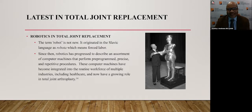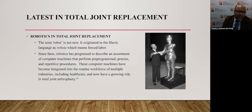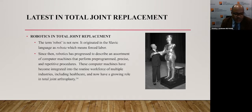The latest in total joint replacement: for many of my colleagues, robotics and total joint replacement is not very new. But for the public at large, it still is a new idea. The term robot is certainly not new — it originated in the Slavic language as 'robota,' which meant forced labor. Since then, robotics has progressed to describe an assortment of computer machines that perform pre-programmed, precise, and repetitive procedures. These machines have become integrated into the routine workforce of multiple industries, including healthcare, and now have a growing role in total joint arthroplasty.